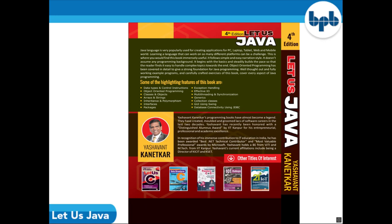Java is very popularly used for creating applications for PC, laptop, tablet, web, and the mobile world. Learning a language that can work on so many different platforms can be a challenge. This is where you would find this book immensely useful. It follows a simple and easy narration style, begins with the basics and steadily builds the pace. Object-oriented programming has been covered in detail to give a strong foundation for Java programming. That's all for this video and we will be covering more topics of the book in the next video. If you liked this illustration about the book, please like and subscribe to BPB Publications.